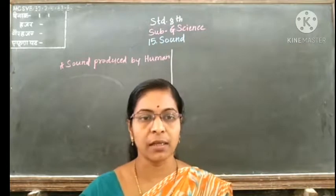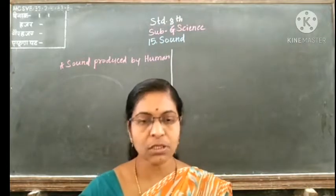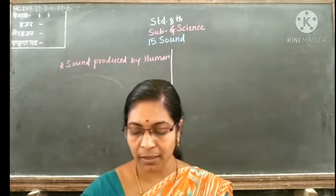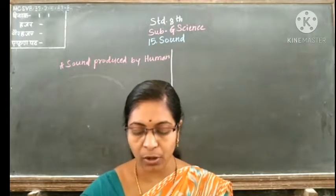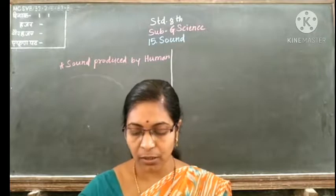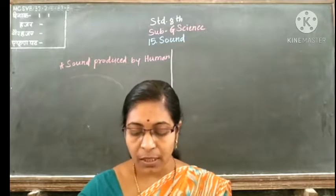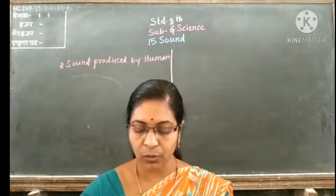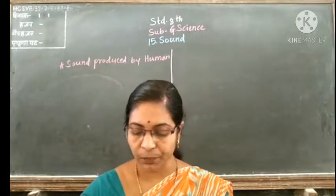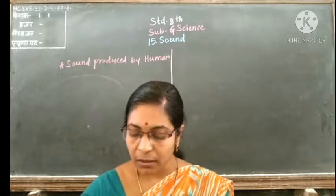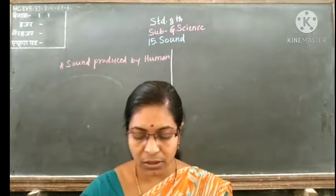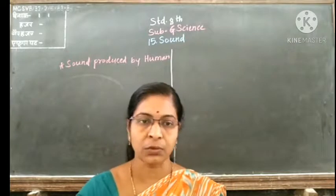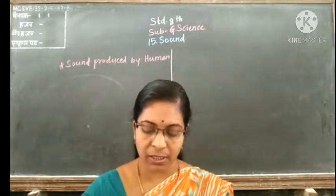Try this: produce sounds like 'bho bho' just like a dog barking, and 'meow meow' just like a cat. Carefully notice the tension on the vocal cords when you produce these sounds. Do you feel that the tension on the vocal cords changes when you produce these two different sounds?